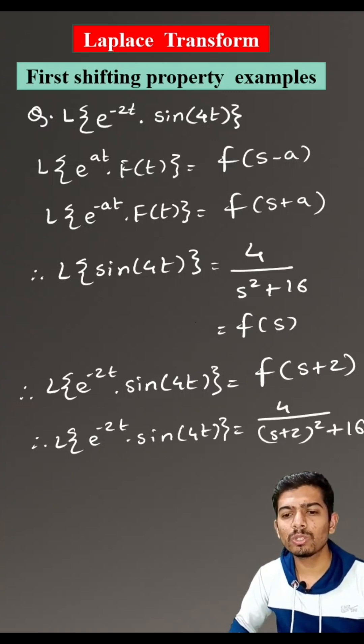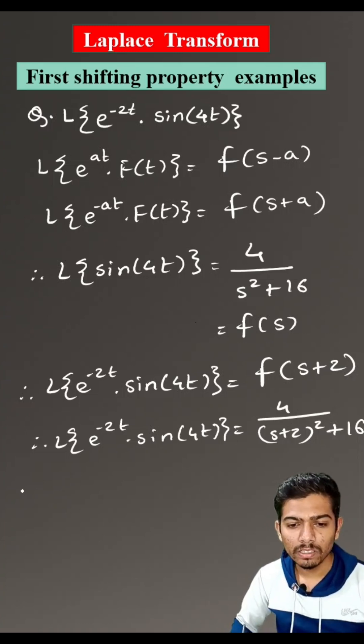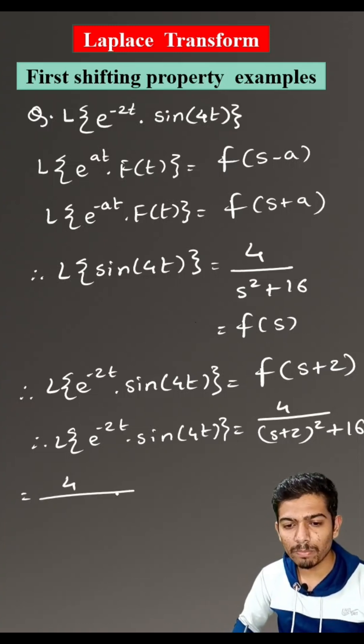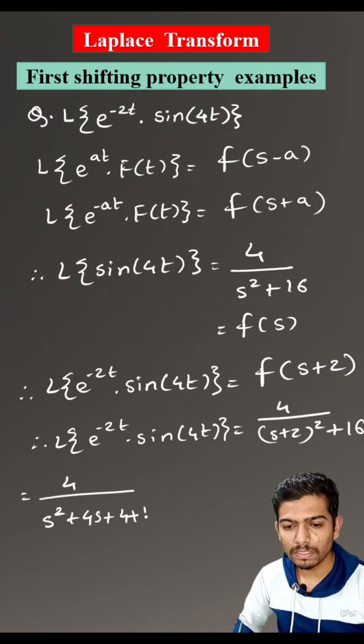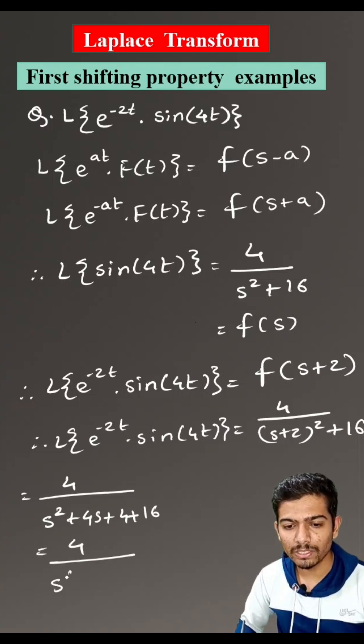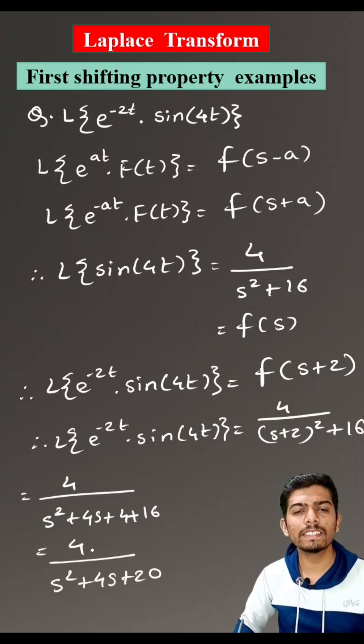This is the value of the question. Also, we can further solve it: which equals 4 divided by s squared plus 4s plus 4 plus 16, which equals 4 divided by s squared plus 4s plus 20. So, this is the answer.